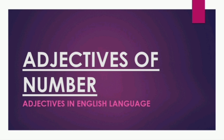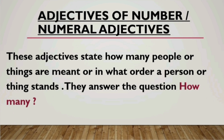Without any further ado, let's get started. Adjectives of number, or numeral adjectives — let's understand them. These adjectives state how many people or things are meant, or in what order a person or thing stands. Basically, adjectives of number refer to countable nouns. They state how many people or things there are, and they talk about the series or order in which something stands. They answer the question 'how many.'